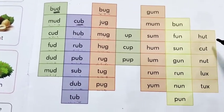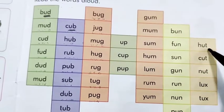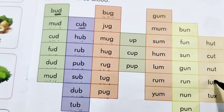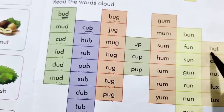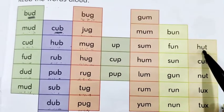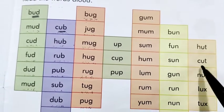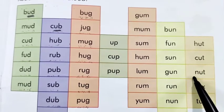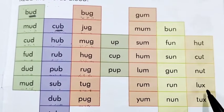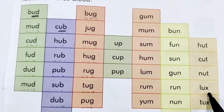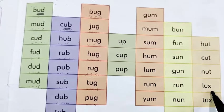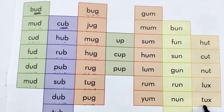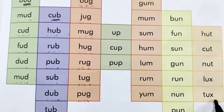Now, here we have some three letter words made by the use of U. The U-T two letter word family and U-X two letter word family. First one is H-U-T, Hut. Then C-U-T, Cut. Then N-U-T, Nut. Then L-U-X, Lux. Then last one is T-U-X, Tux.